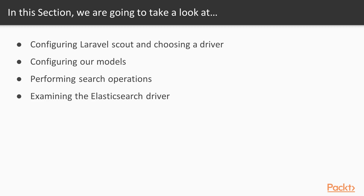Next, we'll build a search page with a view that accepts queries for our model. We'll write code in a controller that performs a search on our model and returns the results back to that view. Finally, we'll build an advanced search page. We'll add upon the search page that we built in the last video by adding advanced search functionality as well as pagination and other improvements to our search page.